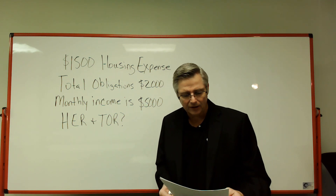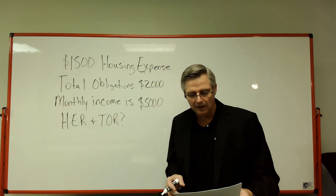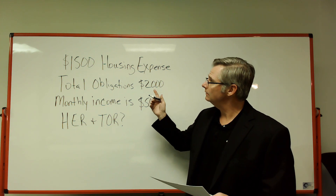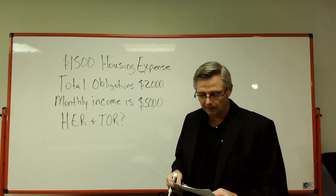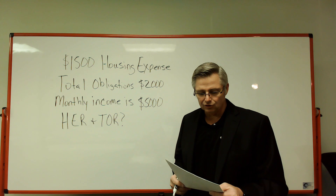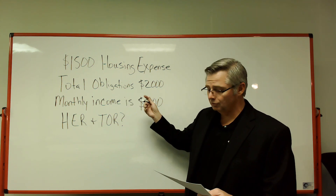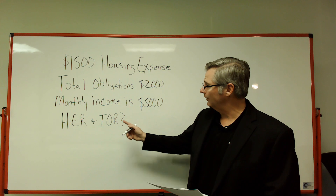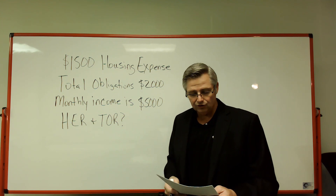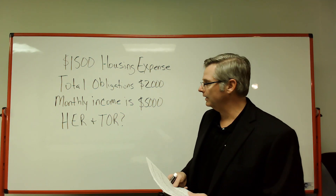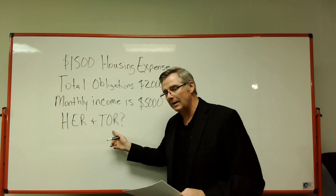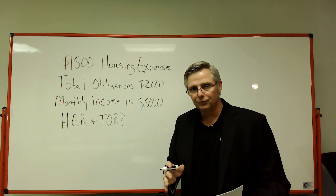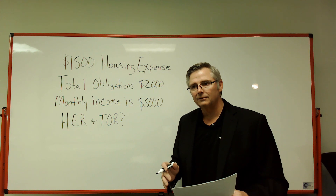An FHA buyer is requesting a $1,500 monthly total housing expense payment. Their total obligations are $2,000 a month, and their total gross monthly income is $5,000 a month. The question asks: what are the housing expense ratio and the total obligation ratio?